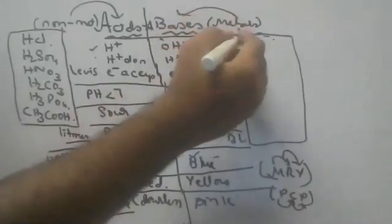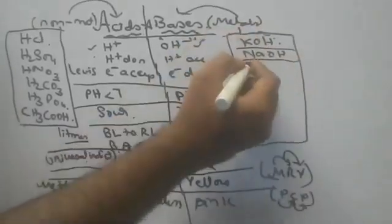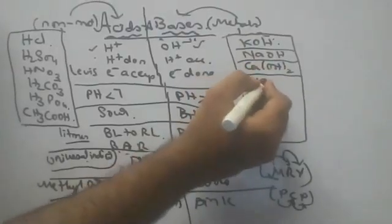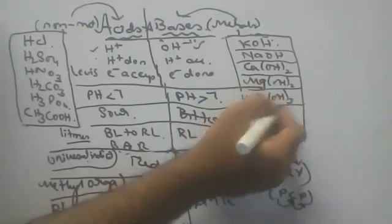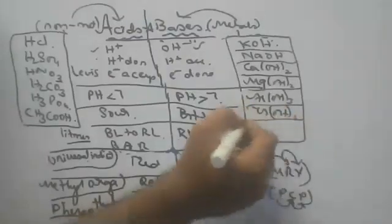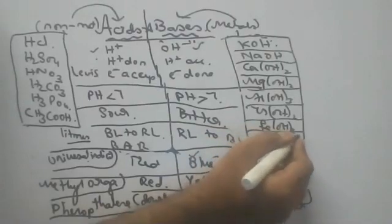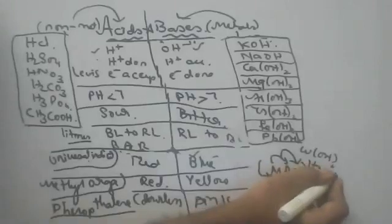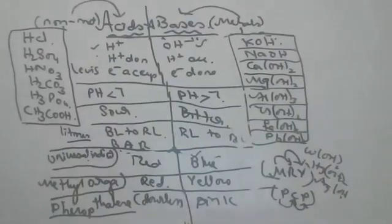Some of the famous bases are KOH (potassium hydroxide), NaOH (sodium hydroxide), Ca(OH)2 (calcium hydroxide), magnesium hydroxide, aluminium hydroxide, zinc hydroxide, iron hydroxide, lead hydroxide, copper hydroxide, mercury hydroxide, and silver hydroxide. Metals mean bases — that's all.